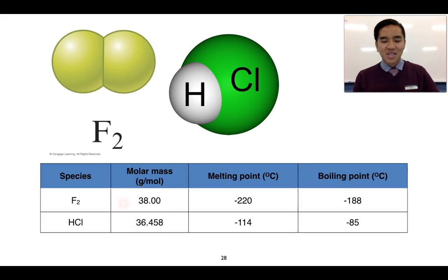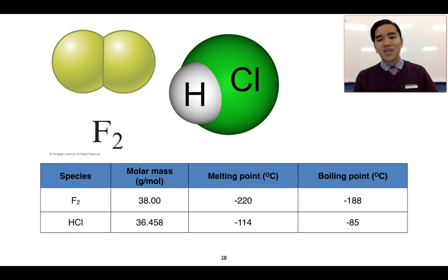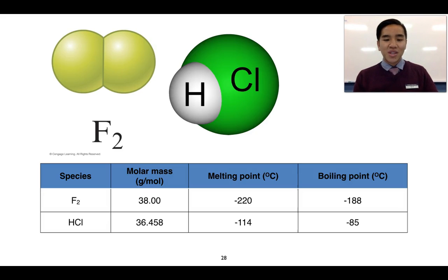This difference has nothing to do with molar mass — fluorine has a slightly greater molar mass, so we'd expect it to have slightly greater dispersion forces. The reason why HCl has a greater boiling and melting point is because it has that additional dipole-dipole interaction that forms between its molecules, and so it requires more thermal energy to separate those molecules than fluorine does.